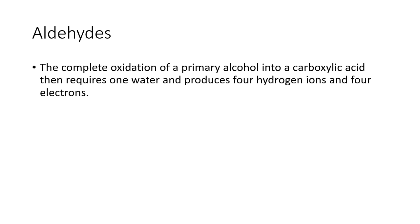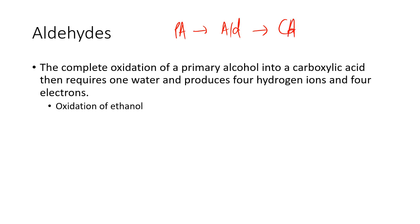Primary alcohols turn into aldehydes, which turn straight into carboxylic acids unless you do something about it. So generally, we just show that primary alcohols go straight to carboxylic acids in one step. If we combine those two equations — primary alcohol to aldehyde, and aldehyde to carboxylic acid — we had two hydrogens and two electrons as products in the first, and two hydrogens and two electrons plus water as reactant in the second. Combining them, we can go straight from a primary alcohol to a carboxylic acid in one half equation.